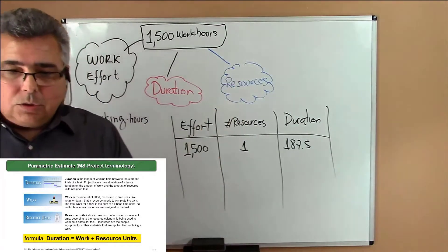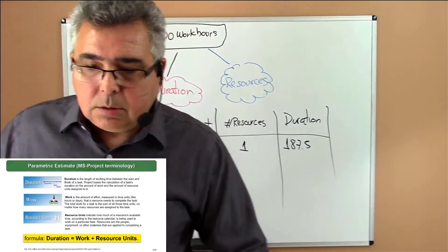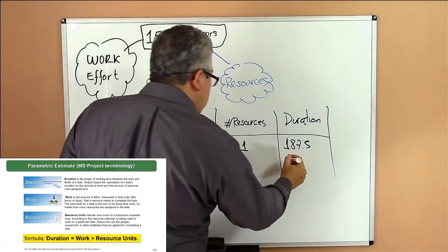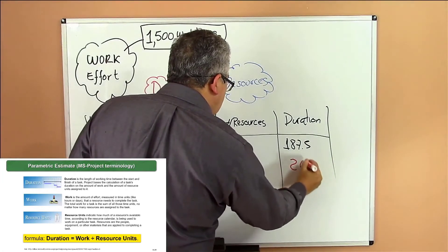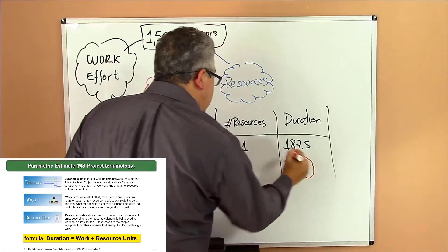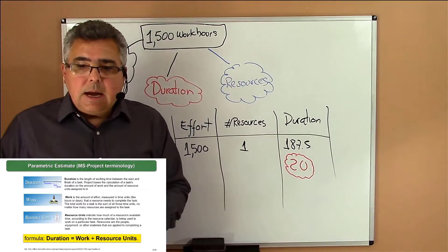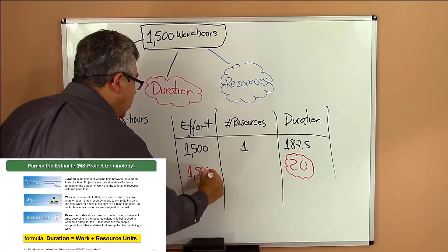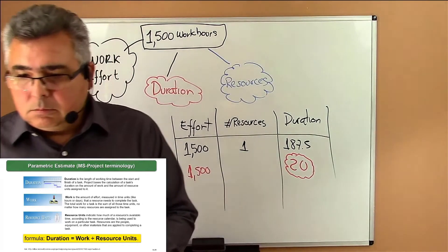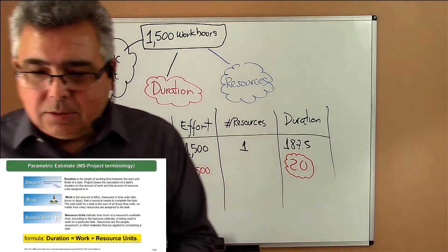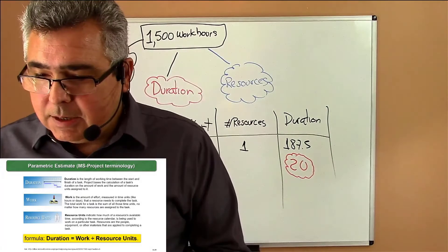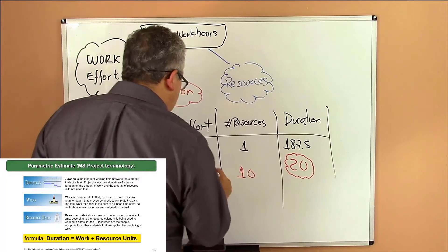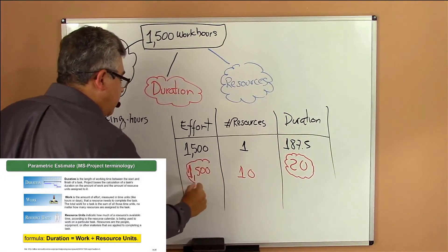I can have another situation. Let's put here a red situation. Your boss tells you, you need to complete that in 20 days. Your clients say you need to complete the task in 20 days. Now, how many people do I need to hire? Let's see if someone can put on the chart area here. 10 people. Because I fixed the effort and the duration.